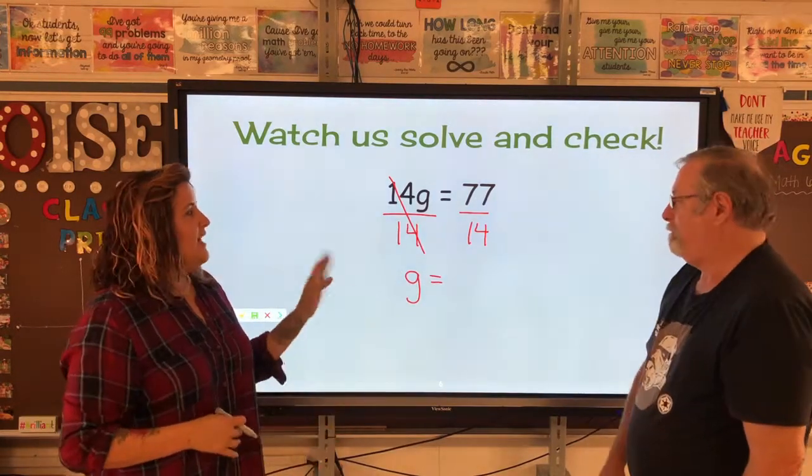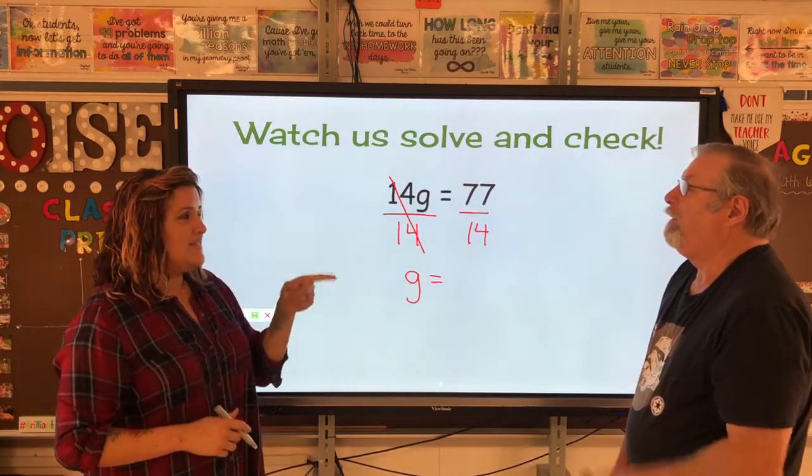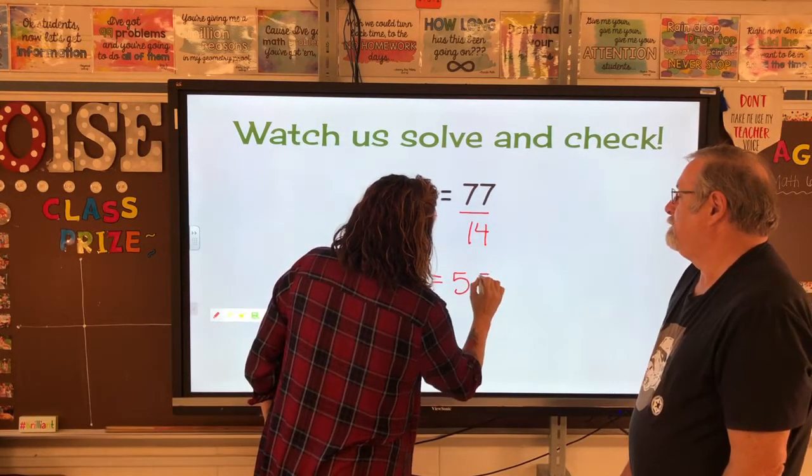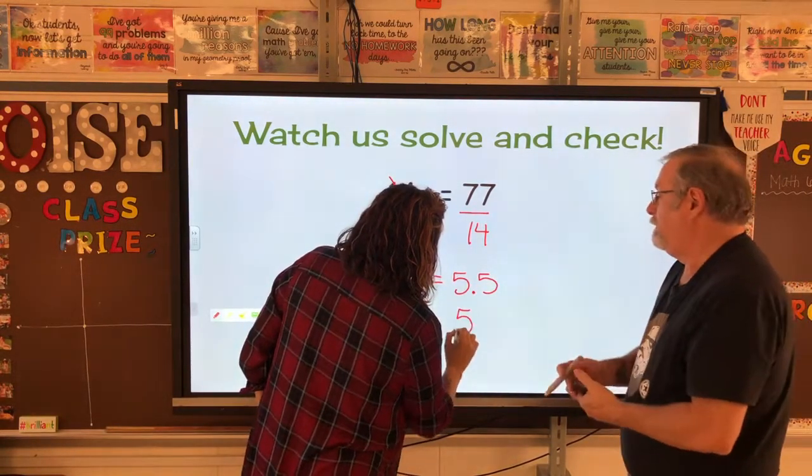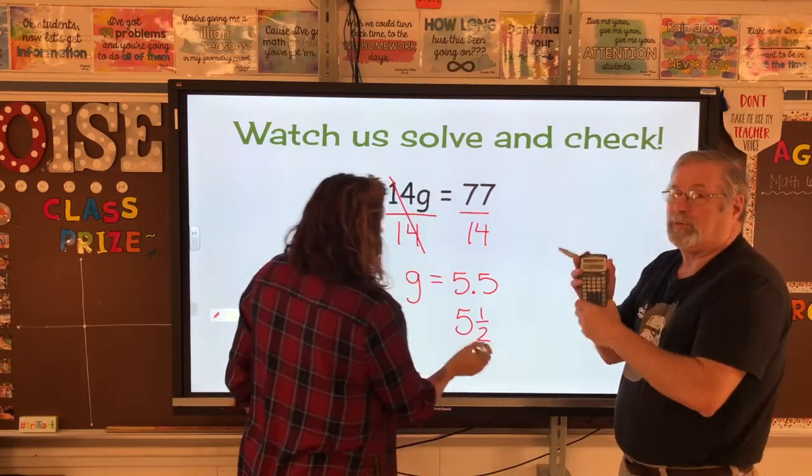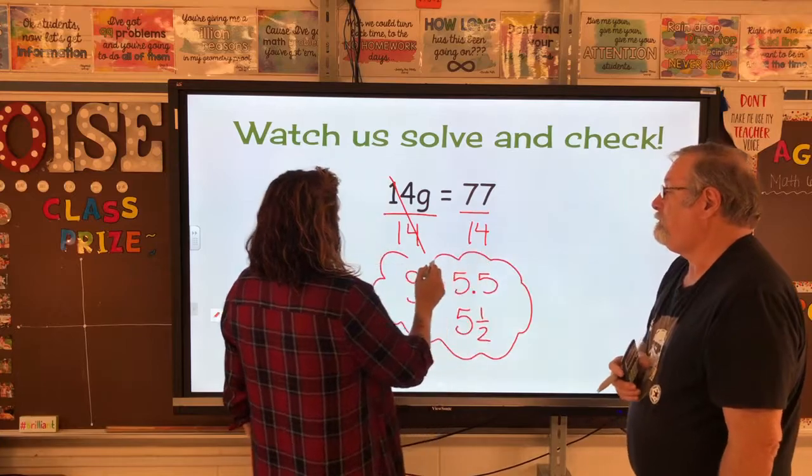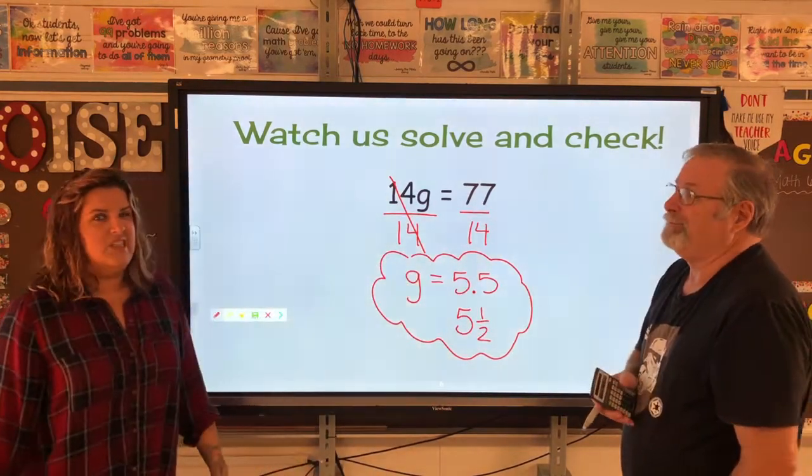So I'm going to divide. So I need to divide each side by 14. 14 divided by 14 is 1, so I just have g. Remember, 1g, I don't write the 1, I have g. And 77 divided by 14 is 5.5. It's a decimal. Or if they wanted it as a fraction, I could write 5 and 1 half. But that's where the calculator really does come into play because I did not want to do that double-double long division.